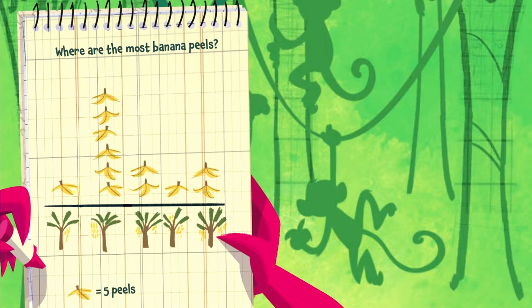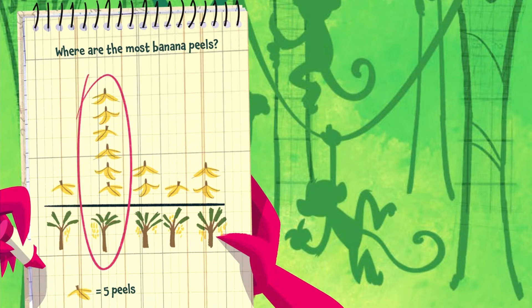Which tree has the most banana peels under it? Do you know? Is it the first tree, the second tree, the third, fourth, or the fifth? That's right — the second tree has the most banana peels.